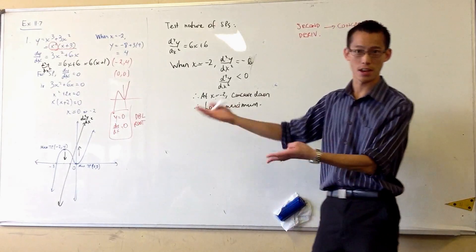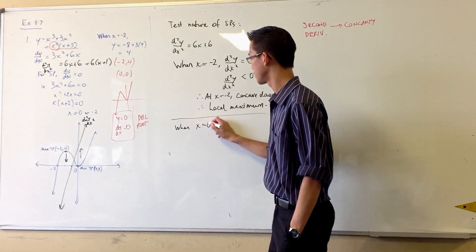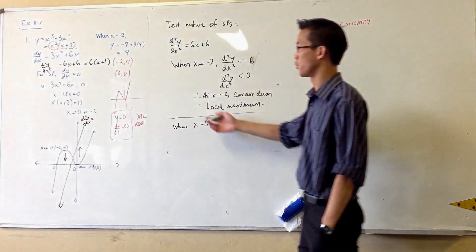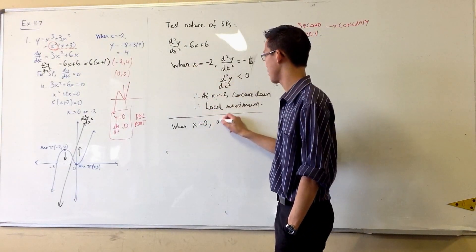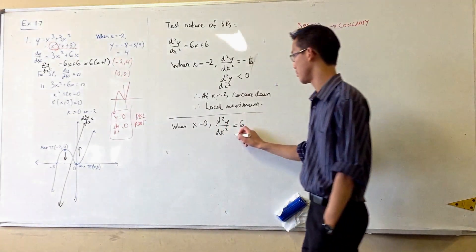In the same way, you test the other one. You say when x equals 0, the second derivative in this case will be 6, and that's positive.